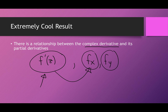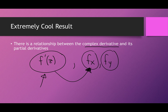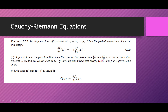We're thinking about the derivative of F of Z — just a regular old derivative — but somehow it's connected to the partial derivative with respect to X, meaning the derivative in the X direction, and the derivative in the Y direction. I'm calling this the Cauchy-Riemann equations. We'll get into what the Cauchy-Riemann equations actually are, but here's our result: Theorem 2.13, which has two parts.